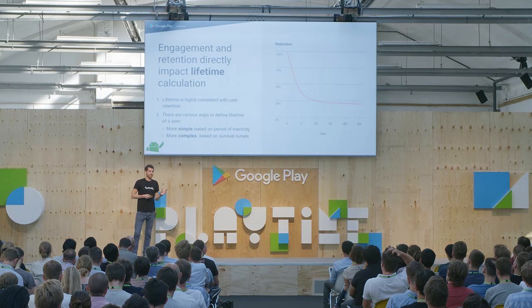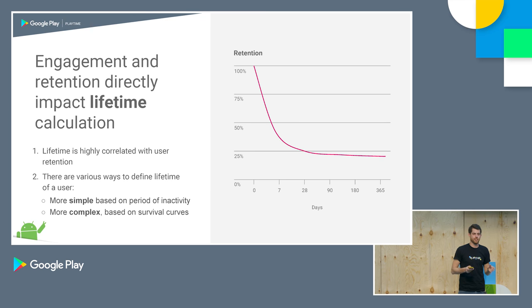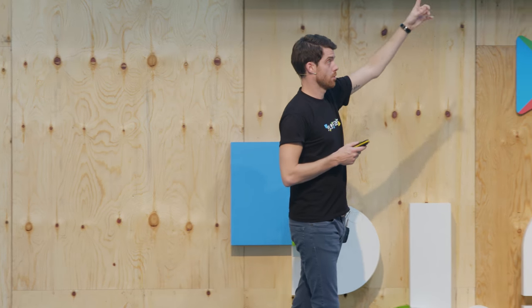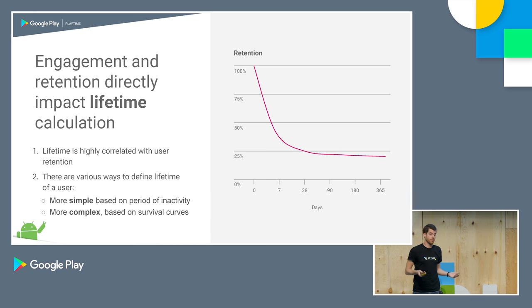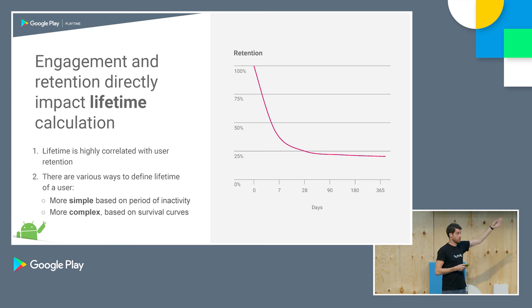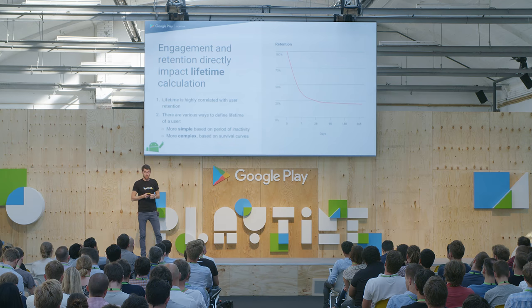With a simple model, for instance, you define a moment of churn — when is churn actually happening for you? Let's say if a user is two weeks inactive, that's churn by your definition. Then you look at your curves and find that on average after six months that's when users go inactive — hence that's your churn point, hence that's your average lifetime. There are also very complex ones based on survival curves, which we'll get to later.